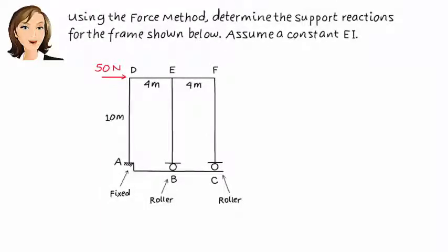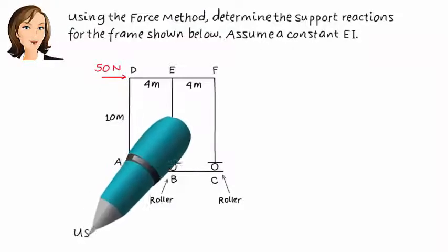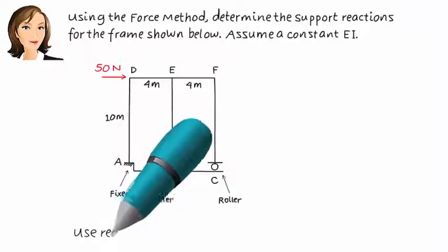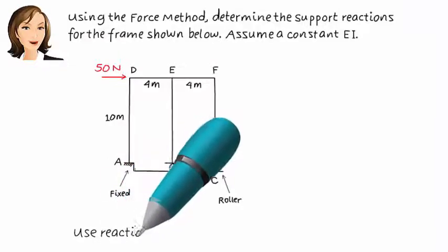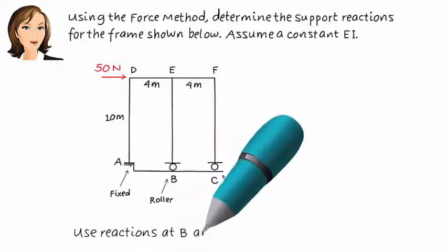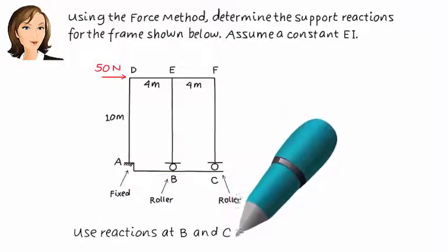Here we have a statically indeterminate frame subjected to a concentrated load. We wish to analyze it using the force method. The frame has a degree of indeterminacy of 2, so we need to pick two of the reactions as redundant forces. Let's make the support reactions at B and C redundant.